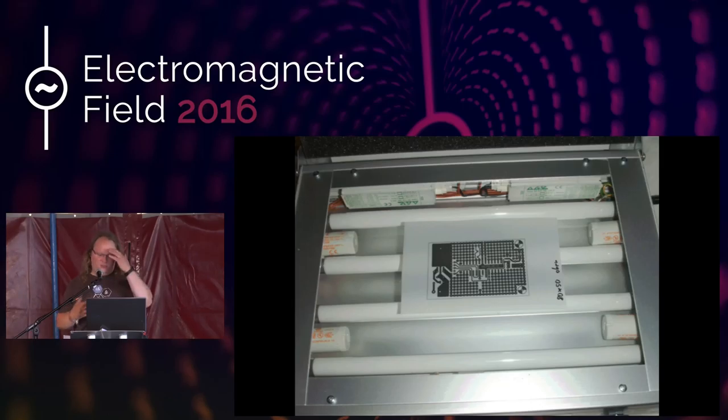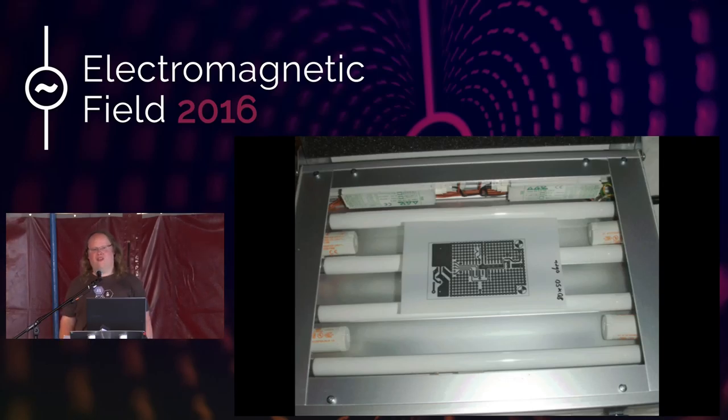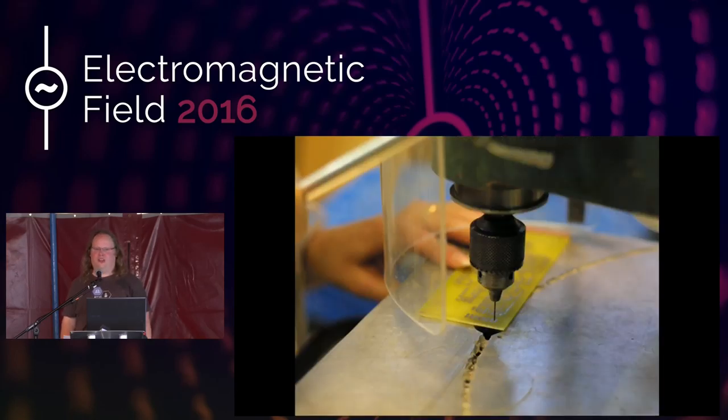So we can do one better than that. This is an ultraviolet exposure box with a transparency on it. Now what you do with this is you get a copper clad board similar to the one in the previous slide. But this one has a special photosensitive coating on it. And you put it on top of the transparency. You close the box. You expose it for a certain amount of time. And the advantage of that is that the transparency can come straight out of your laser printer.